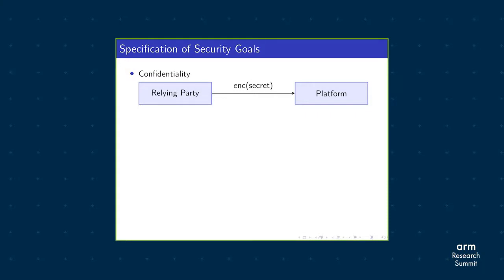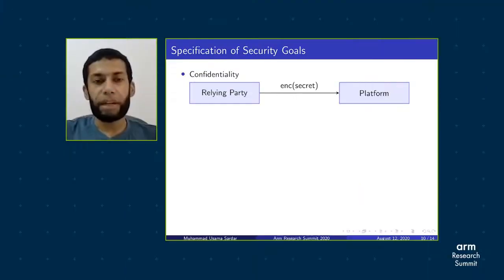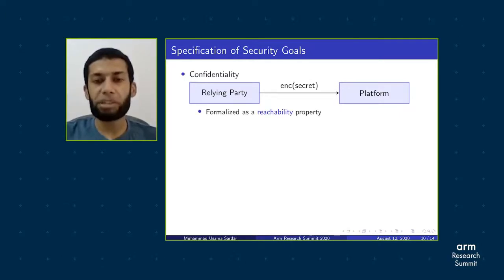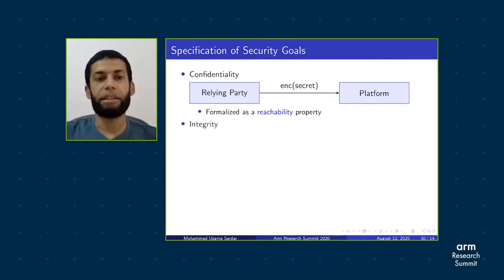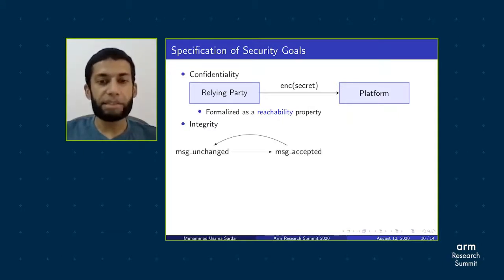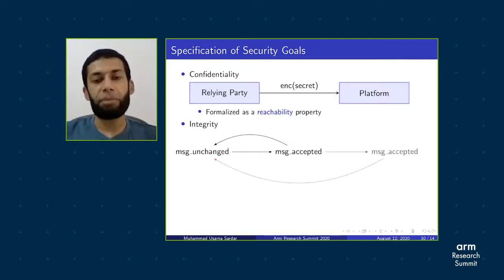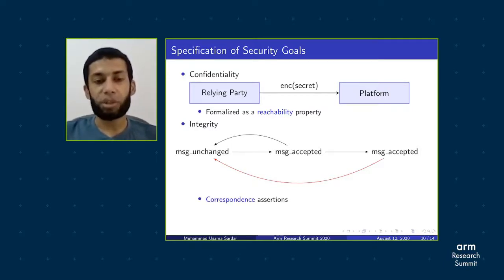In the context of the attestation process, confidentiality is one of the most important security goals for a trusted execution environment. For example, when a relying party sends an encrypted secret to a platform, this can be formalized as a reachability property — we analyze whether it is possible for an adversary to reach a state where it can obtain the secret in plaintext. Another important property is integrity, which can be seen as: for every message that is accepted, there is a previously unchanged message. However, this can be problematic because it can accept multiple messages corresponding to a single unchanged message. This is formalized as correspondence assertions.